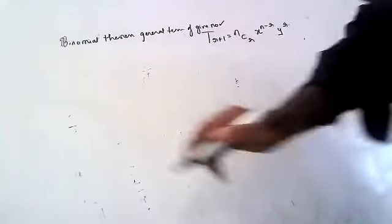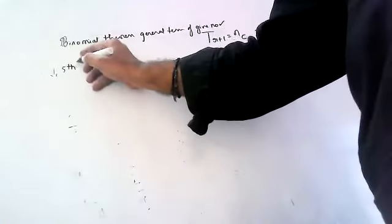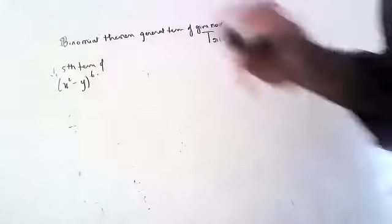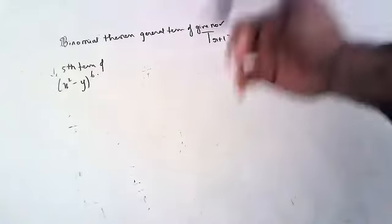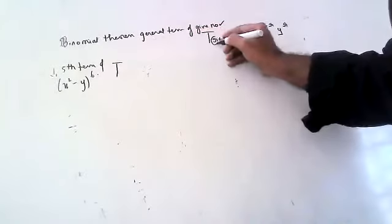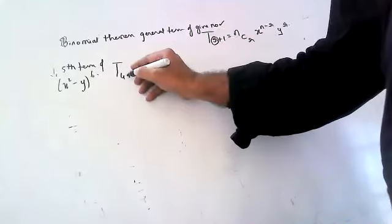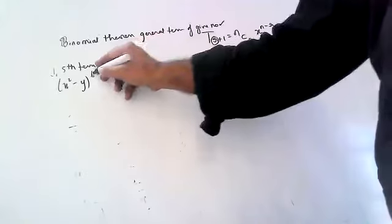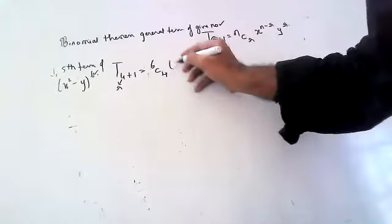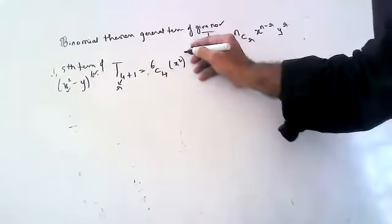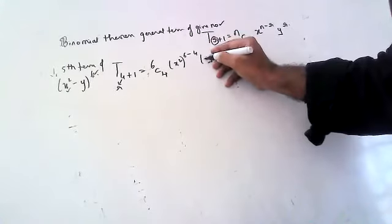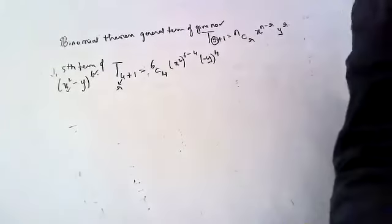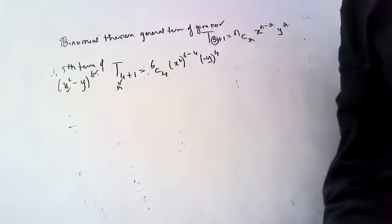First question: find the fifth term of (x² - y)⁶. Whenever they ask for the fifth term, children, fifth term means T(4+1), so r = 4. n is 6, so it is 6C4 · (x²)^(6-4) · (-y)^4. That's it, children. If you want to simplify, you can simplify.